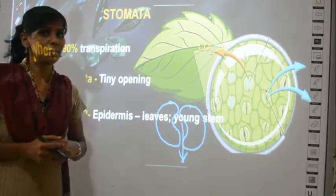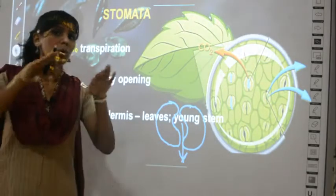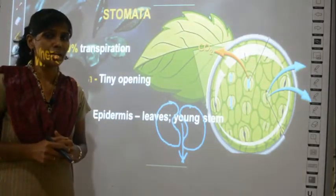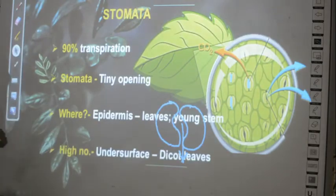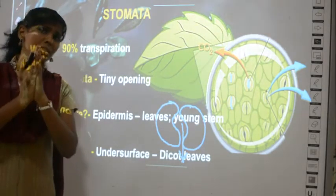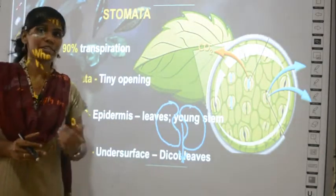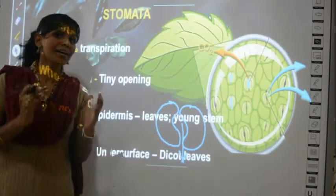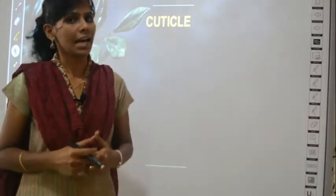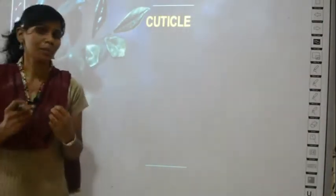Stomata are present in the epidermis — the outermost layer — of leaves and young stems. Where can you find the highest number of stomata? Especially in dicot leaves, you can see the highest number of stomata on the under surface of the leaf.